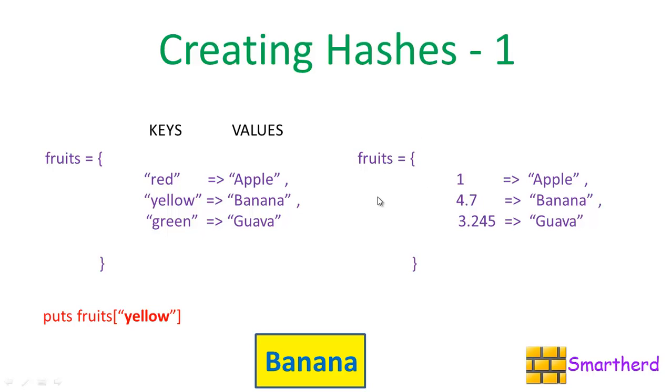This is another hash. All the values of these fruits hashes are the same. Only difference is that I have changed the keys. Here, instead of string keys, I have taken the FixNum which is a float, which is an integer value. 4.7 which is a float value, then 3.245 is also a float value.